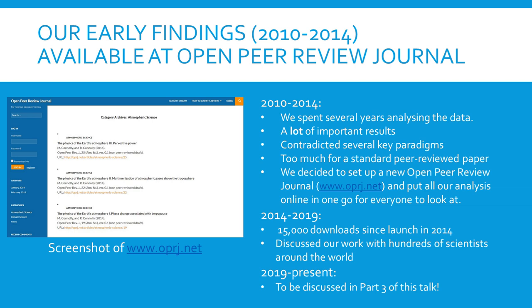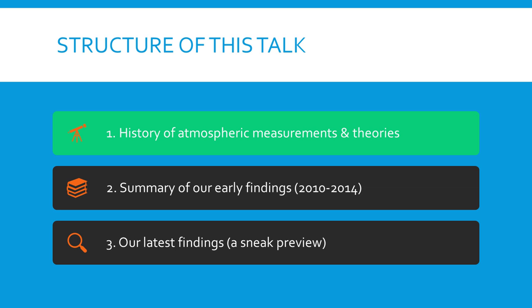There's data going back to the 50s and we found a load of different results. We realized that there were a lot of paradigms in current atmospheric modeling that people had never tested. We had so much we couldn't fit it into one single peer-reviewed paper, so we decided to put everything onto a website for open peer review. Most of the work we'll be talking about is available there. We'll also present a sneak preview of newer work we're preparing to submit for peer review.